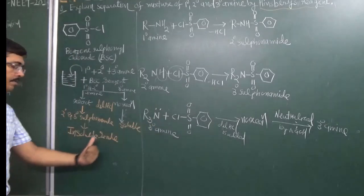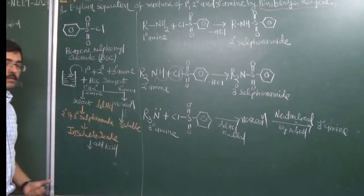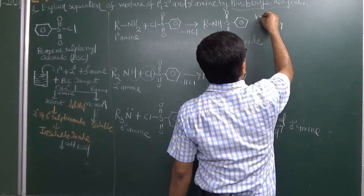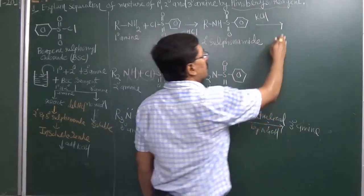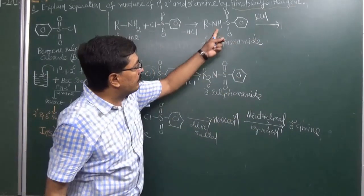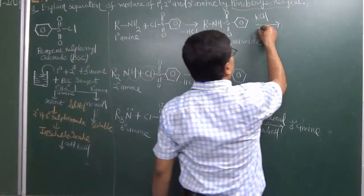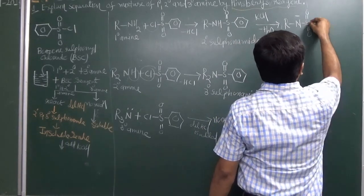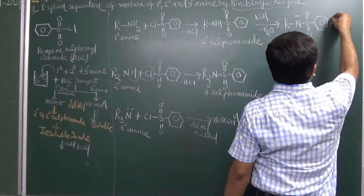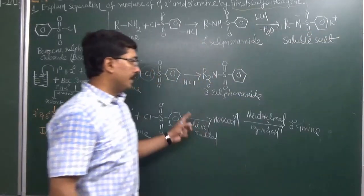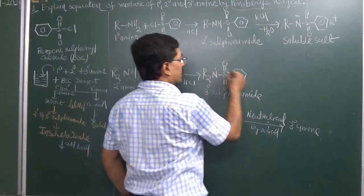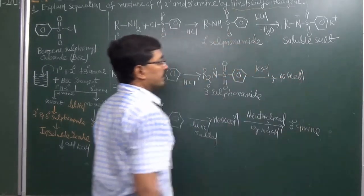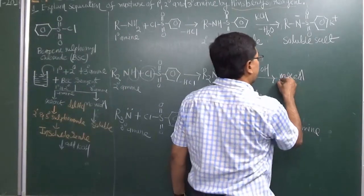The remaining insoluble residue contains secondary and tertiary sulfonyl amides. To this we add an alkaline solution — potassium hydroxide or sodium hydroxide. The secondary sulfonyl amide has a hydrogen atom on it; this hydrogen reacts with OH⁻, removing H₂O and forming a soluble salt. The tertiary sulfonyl amide has no hydrogen atoms, so there is no reaction and it remains as an insoluble mass.